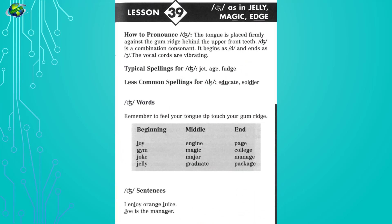Lesson 39: J as in jelly, magic, edge. Listen and repeat. Joy, gym, joke, jelly, engine, magic, major, graduate, page, college, manage, package. I enjoy orange juice. Joe is the manager.